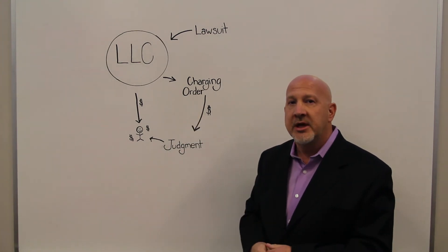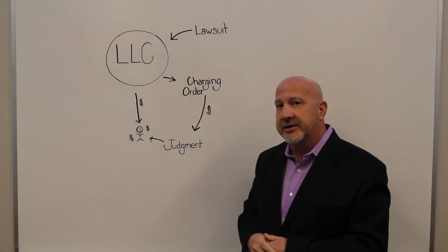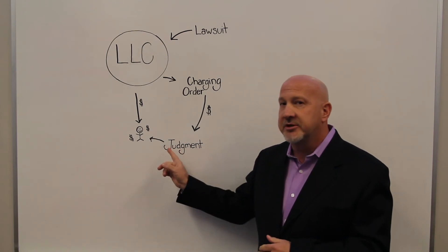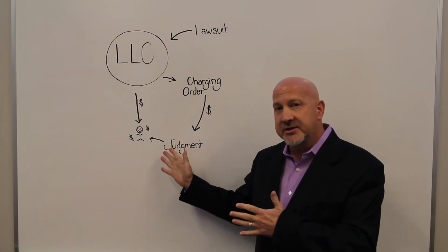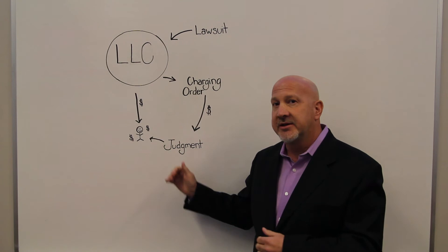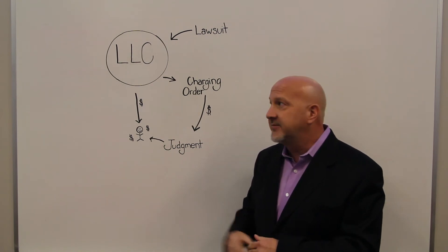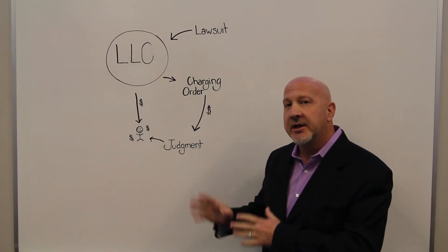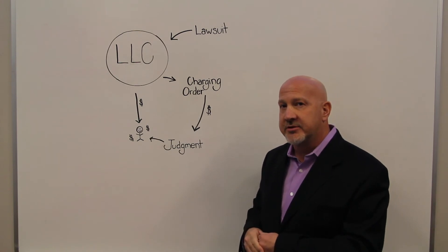Our law states that the exclusive remedy of a judgment creditor is they can go into court and get what's called a charging order. And a charging order against an LLC's membership interest really is just like a lien against their right to receive distributions of profit from the LLC when and if those profits are distributed.